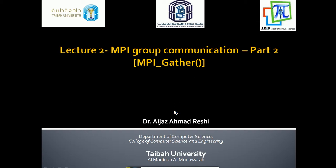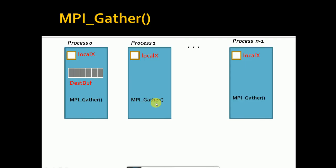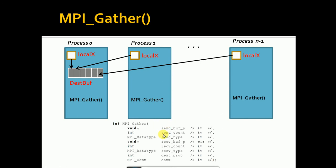As the name suggests, gather does the opposite of what scatter does — it gathers data from N processes into one process. For example, if a parallel program is running as N processes, there can be data scattered throughout those N processes, one element per process, such as a local variable local_x. If we want to gather it within one process, say process zero, we can use the MPI_Gather function.